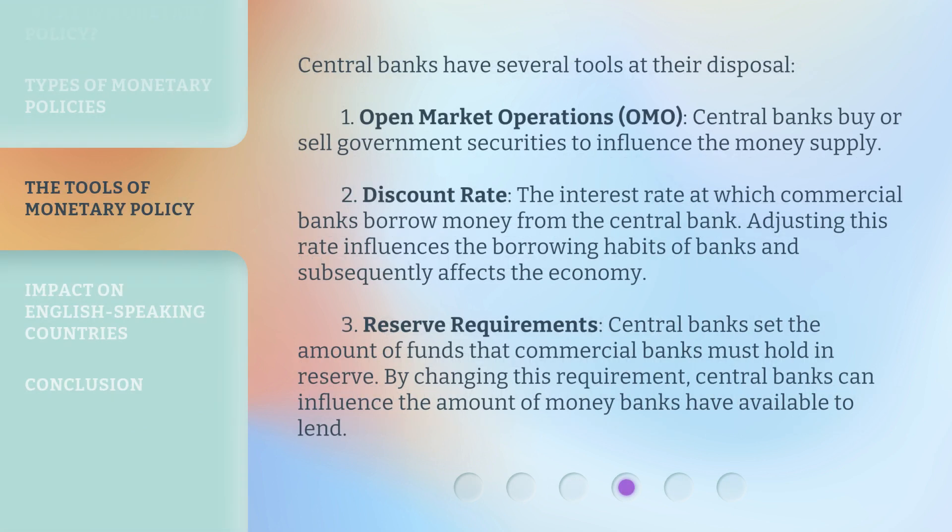Central banks have several tools at their disposal. 1. Open Market Operations: Central banks buy or sell government securities to influence the money supply. 2. Discount Rate: The interest rate at which commercial banks borrow money from the central bank. Adjusting this rate influences the borrowing habits of banks and subsequently affects the economy.